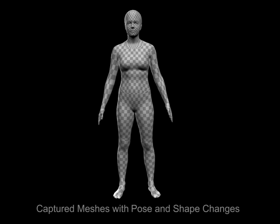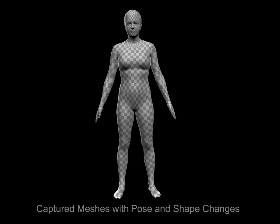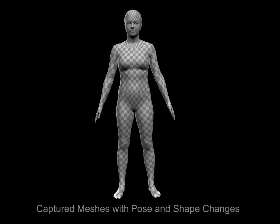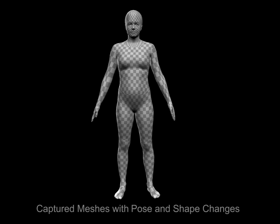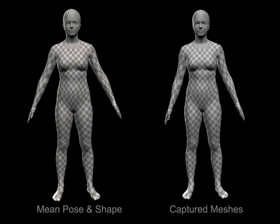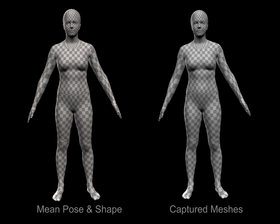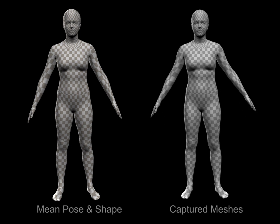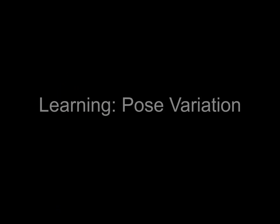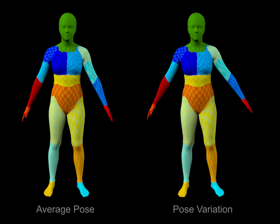Given breathing deformations for each subject, we compute the statistics of breathing shape change in our population. Consider a single subject. We compute their mean pose and shape, then compute the deviation of each training mesh from the mean. These deviations correspond to changes due only to breathing. We first consider pose variation.